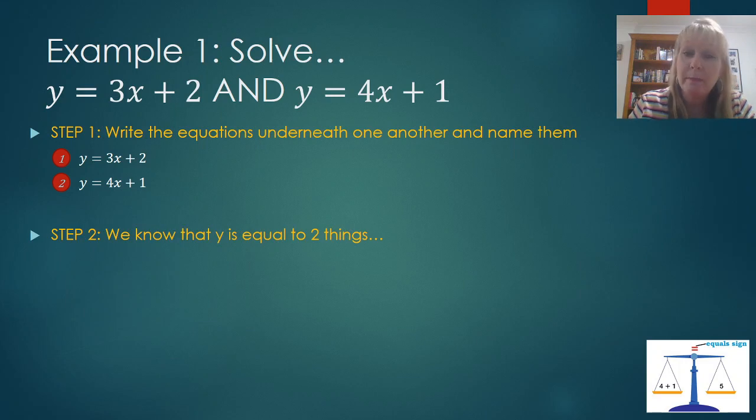Step 2, I know in this particular instance that y is equal to two things. Firstly, it's equal to 3x plus 2. Y is also equal to 4x plus 1. So if something is equal to this and it's equal to that, then I have to assume that this and that are also equal. So I've made this statement here, 3x plus 2 equals y, which also equals 4x plus 1. So let's get rid of the middleman, y. We've now got 3x plus 2 equals 4x plus 1.